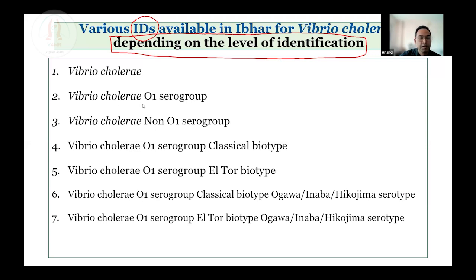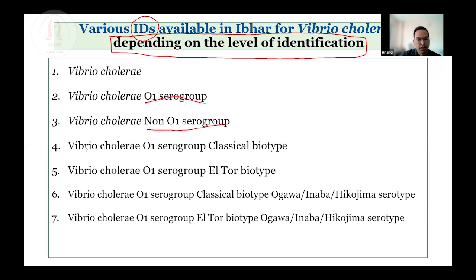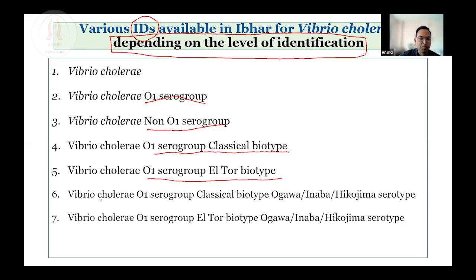If Vibrio cholerae is confirmed with O1 serogroup, then this option can be selected. If the lab has identified the organism as Vibrio cholerae beyond any doubt but it is not responding to O1 antiserum, it can be selected as Vibrio cholerae non-O1 serogroup. Only those Vibrio cholerae which were positive with O1 anti-sera proceed to biotyping, and the appropriate biotype — Classical or El Tor — is selected. If serotyping is also performed, the remaining options including Ogawa, Inaba, or Hikojima can be selected.